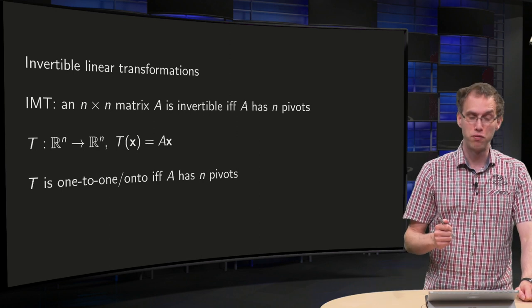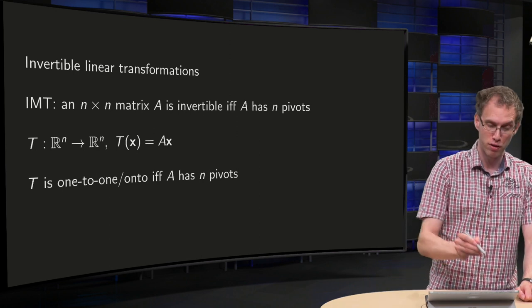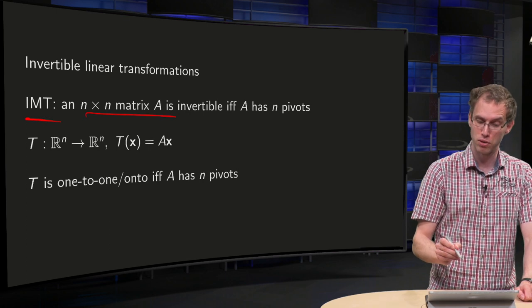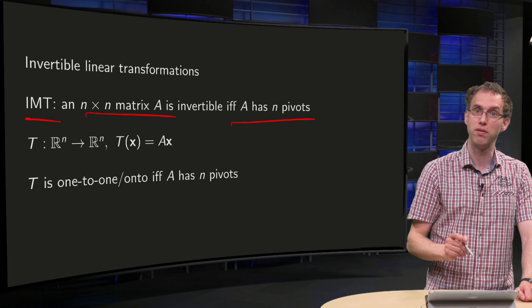Well, it reminds us of the Invertible Matrix Theorem. The Invertible Matrix Theorem said that the square matrix n times n matrix A is invertible if and only if A has n pivots.